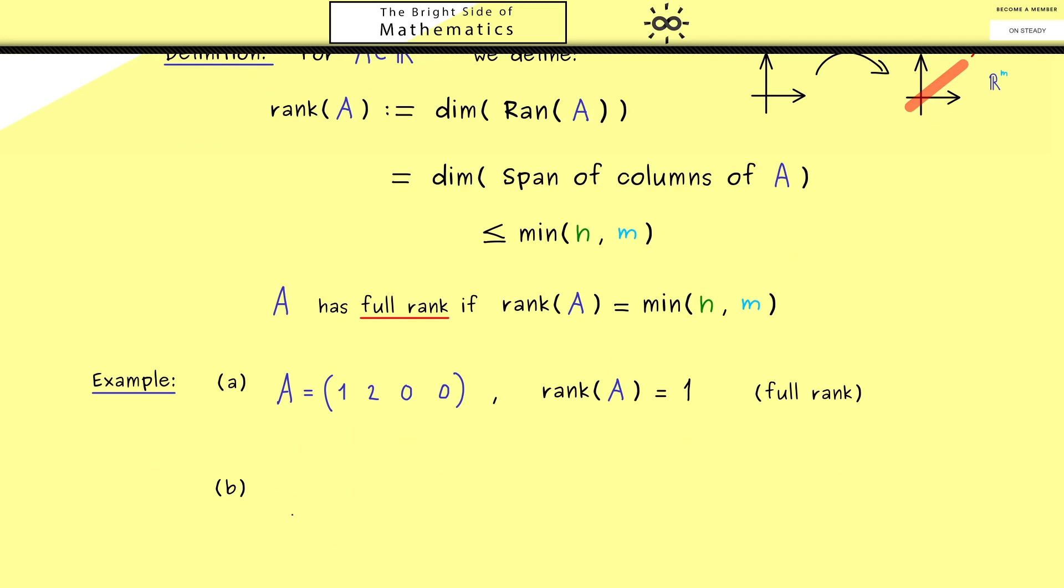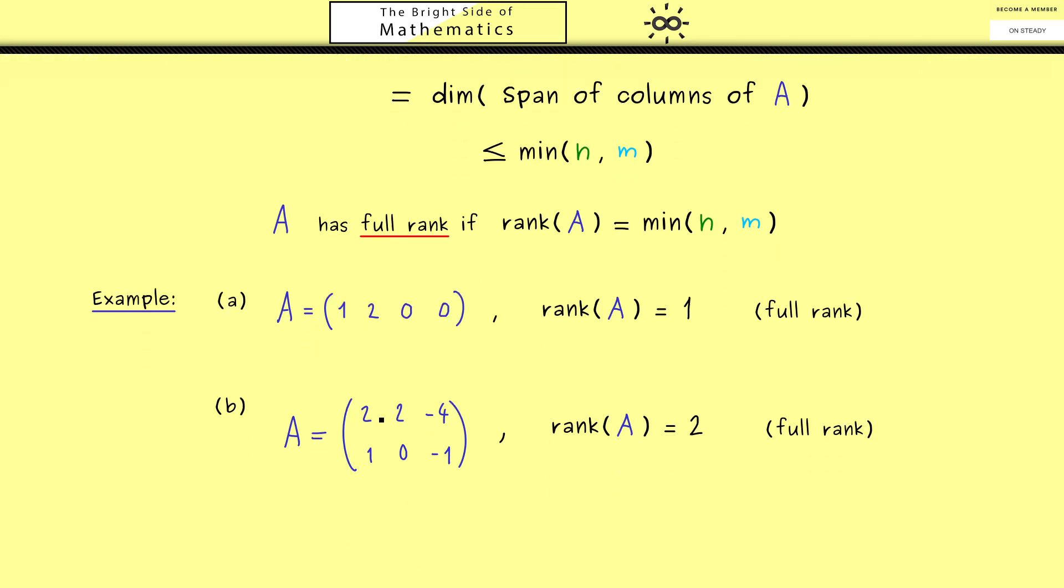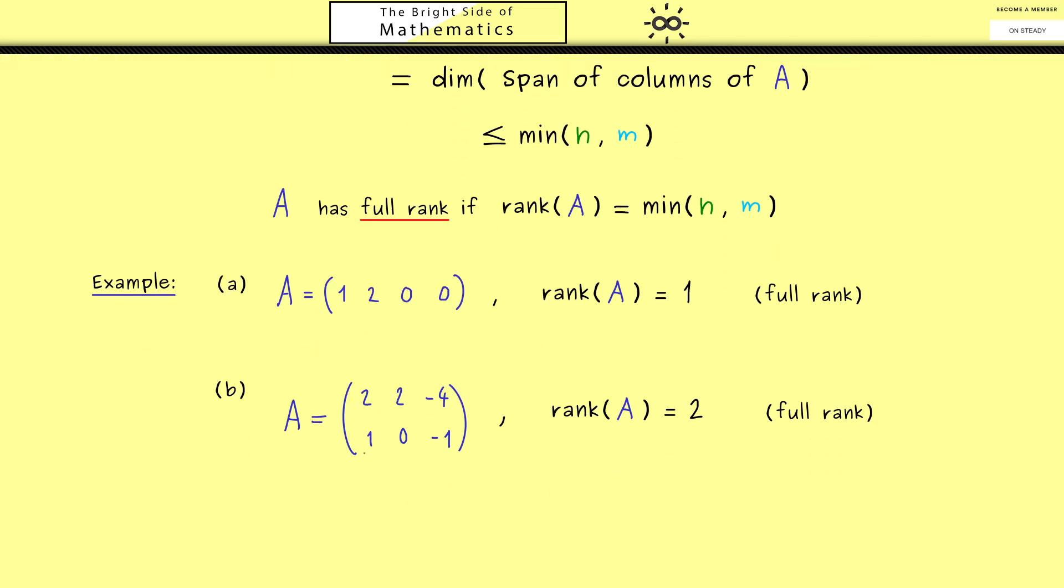Okay, then maybe another example might be more interesting. Now let's take a 2 times 3 matrix. Therefore we can conclude that the maximum number the rank can have is now 2. In fact, we already see that the first two columns here already span a two-dimensional subspace in R^2, or in other words they span the whole R^2 already. So the third column is not needed for seeing that the rank is 2. So we conclude also here we have a matrix of full rank.